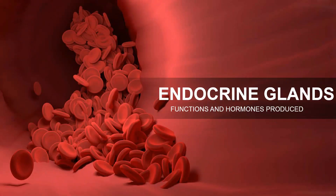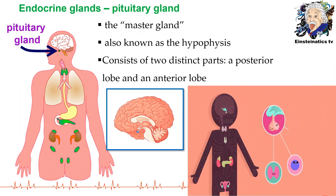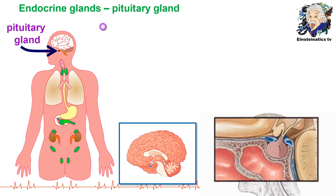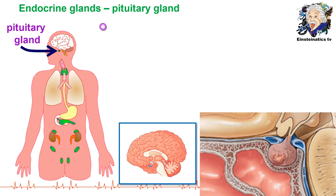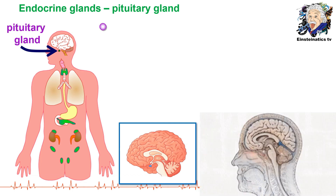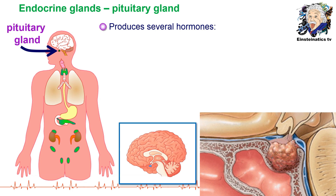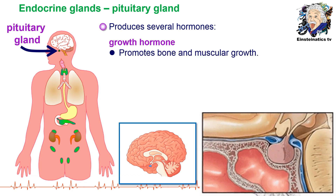Now we are going to focus our discussion on the different types of endocrine glands — their functions and the hormones each one produces. The first type of gland is the pituitary gland, also called the master gland because it controls the majority of all the other endocrine glands. It is also known as the hypophysis, and it consists of two distinct parts: the posterior lobe and the anterior lobe. The pituitary gland produces several hormones; one important hormone it produces is the growth hormone.